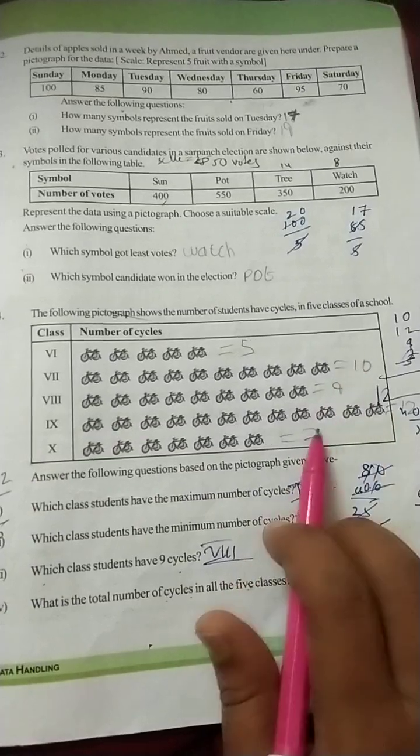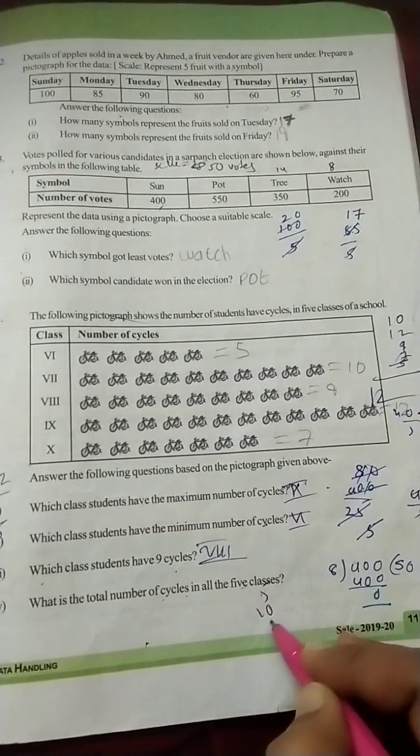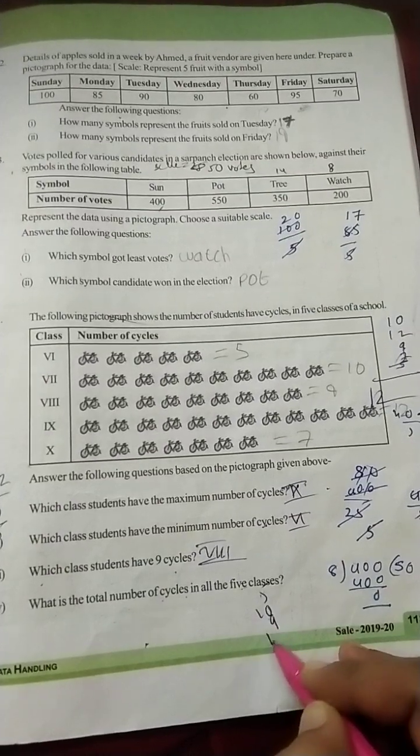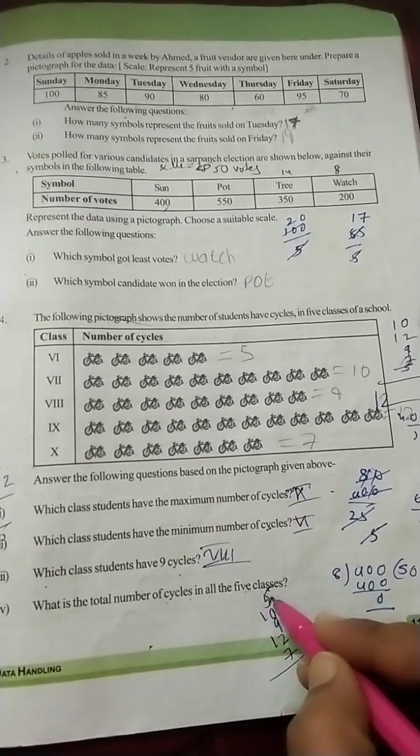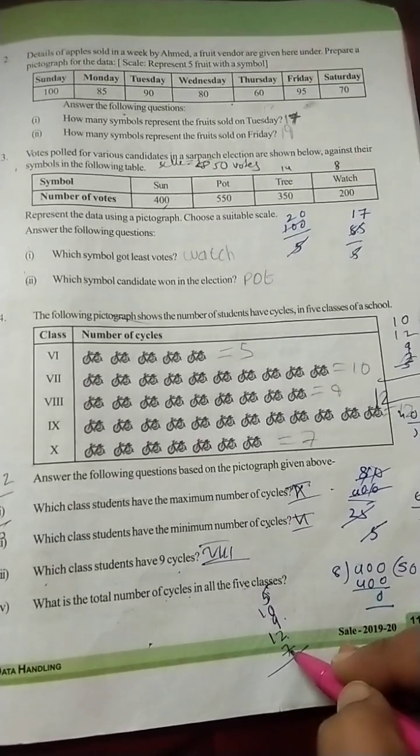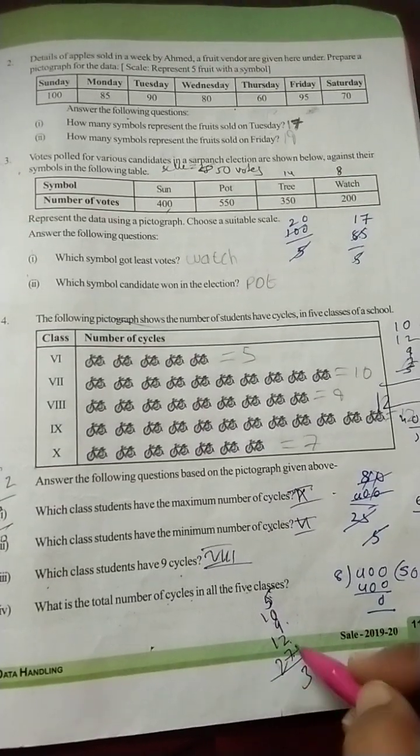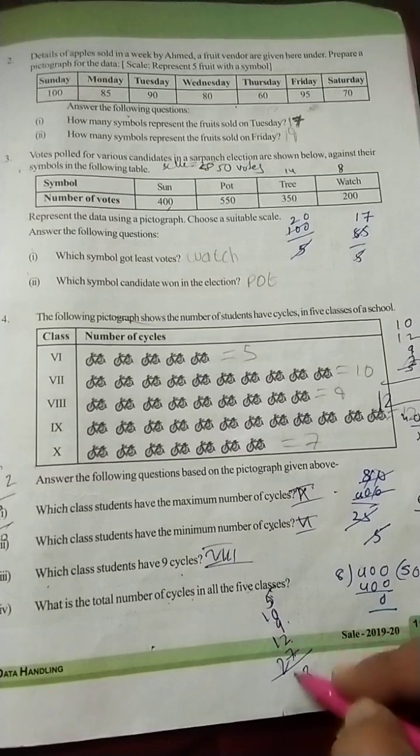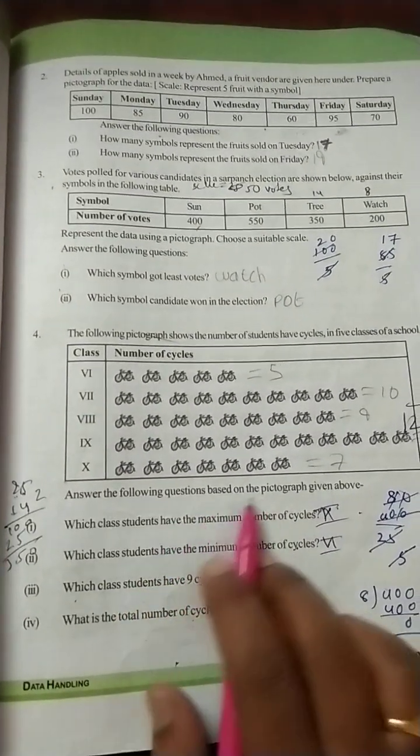What is the total number of cycles in all five classes? Overall in all five classes, how many total number of cycles? Just we should add all these. You will get the answer. Very simple. Now just you can add five, ten, nine, twelve, seven. Here five plus nine, fourteen plus two, sixteen, sixteen plus seven, twenty-three. Four, forty-three. Total number of cycles, forty-three.